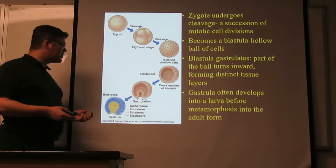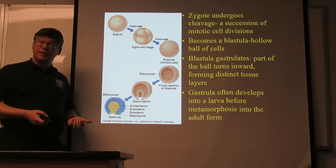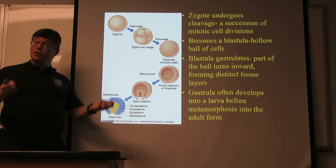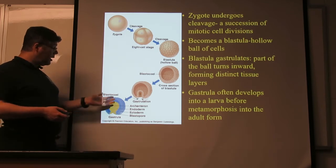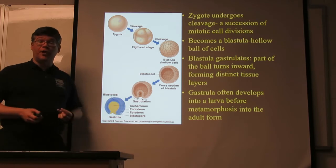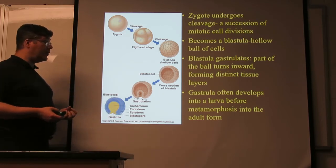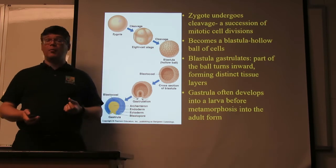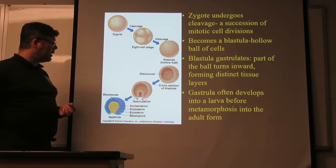More complex than a sponge isn't saying all that much — we've got two distinct layers. So this can give us something like a jellyfish, comb jelly, things of that sort. In turn, this will develop further. Often there's a larval stage, very different from the adult, and then a process of metamorphosis to become the final adult stage.